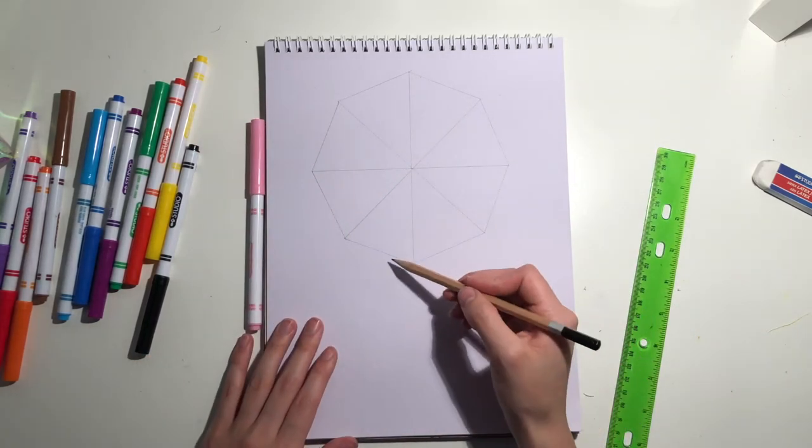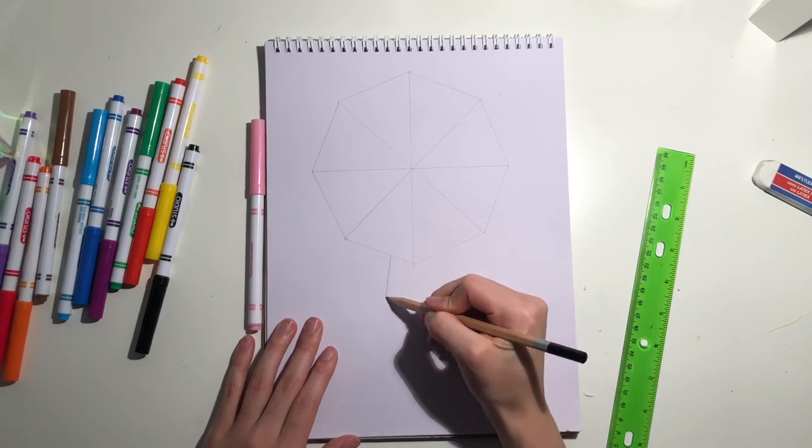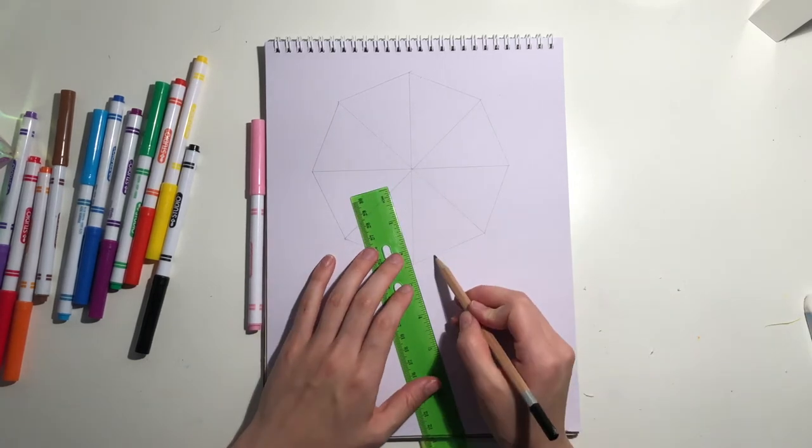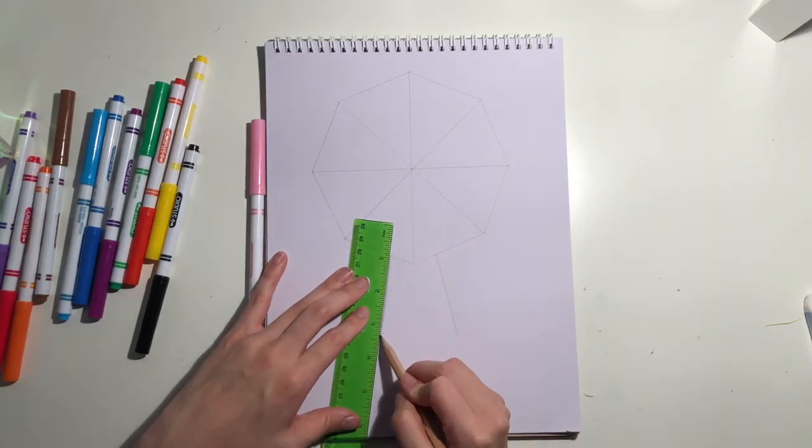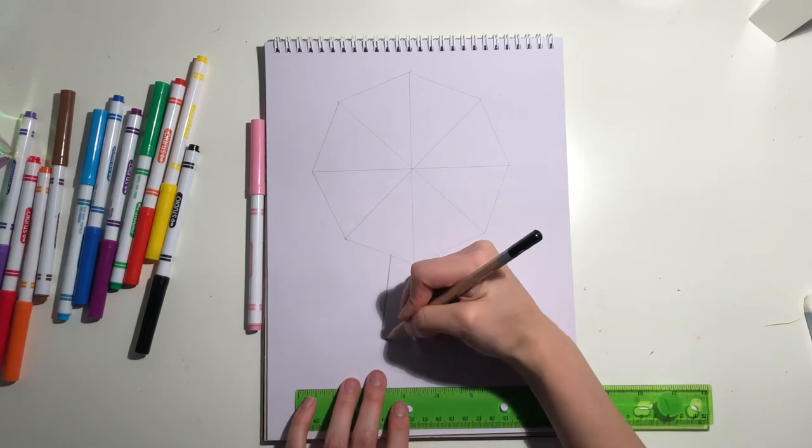Next, draw two lines coming out from the bottom of the umbrella. This is going to be the jacket. Connect these lines with a curve.